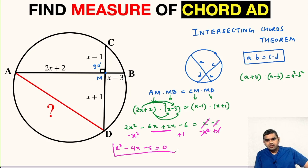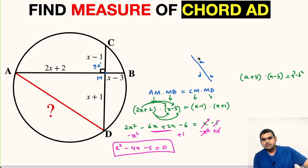So we have got a quadratic equation. We need to solve it in order to get the values of X. So let us solve it here. We can write X squared minus 5X plus X minus 5 equal to 0.